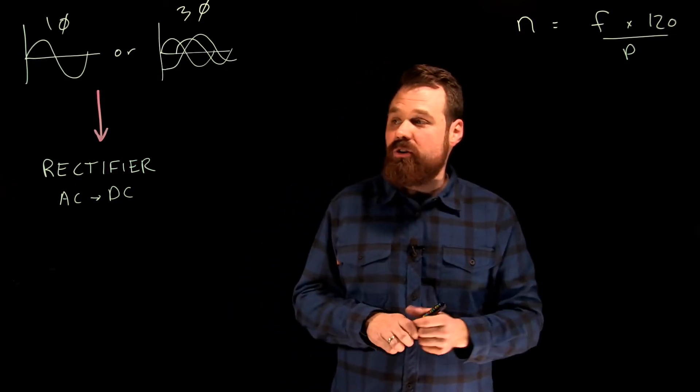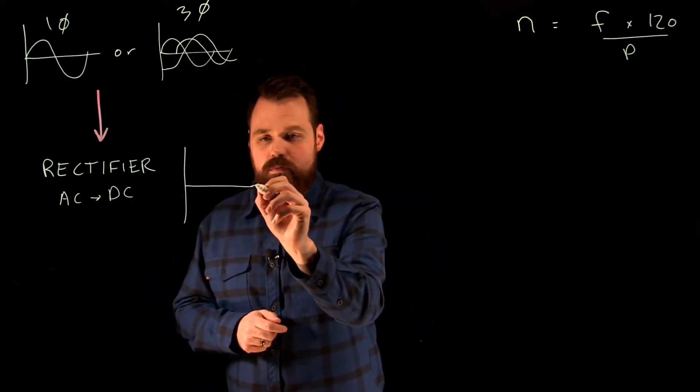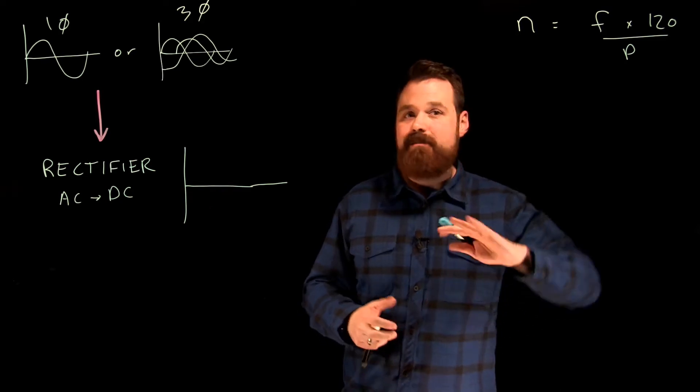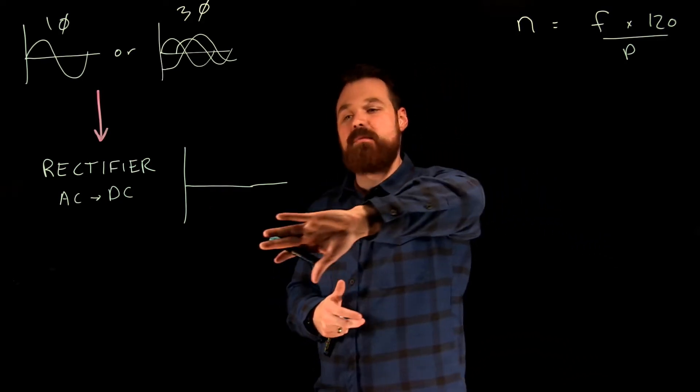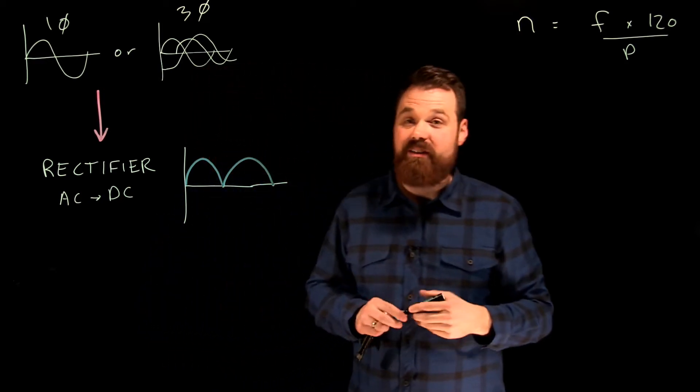What a rectifier does is take AC and convert it into DC. Basically, when I rectify AC into DC, I'm taking the bottom half of my sine wave and flipping it up. So I see now a power that looks something like that.